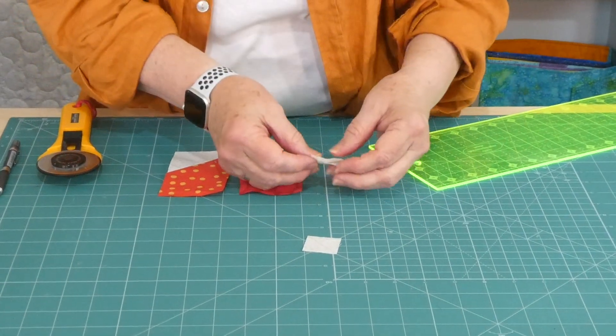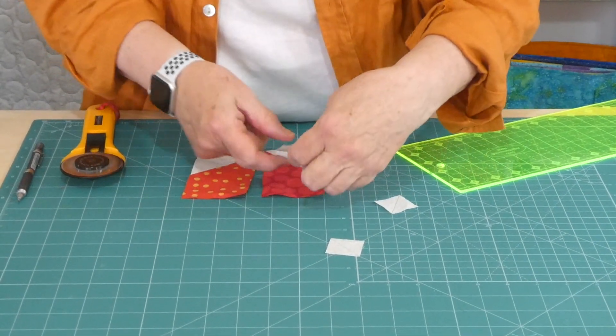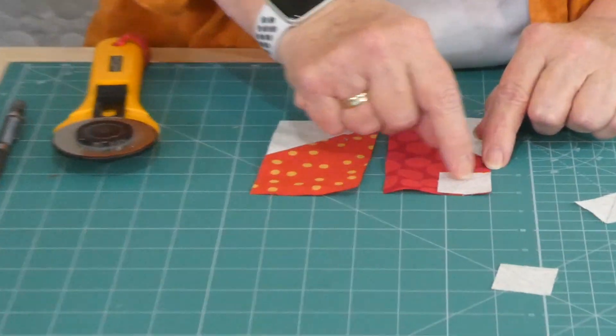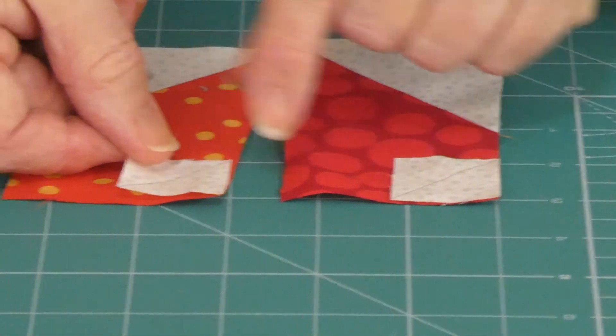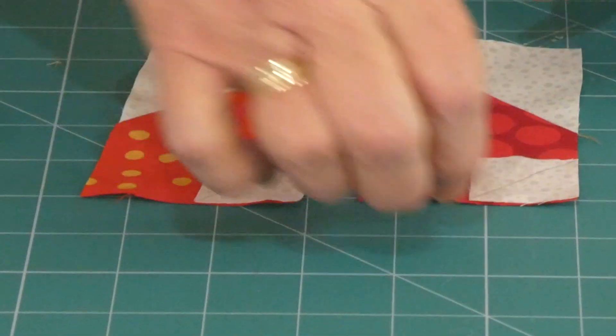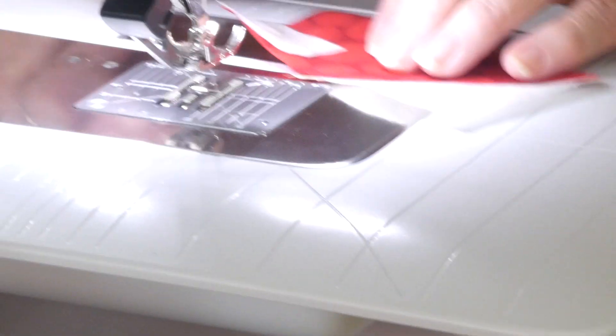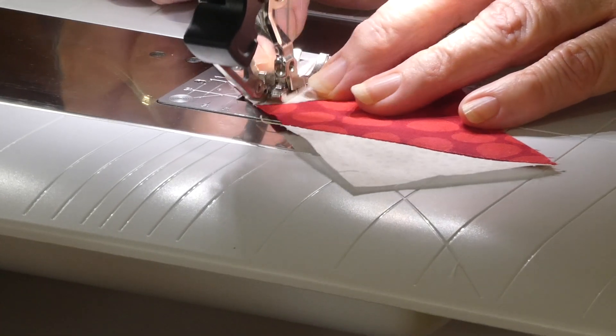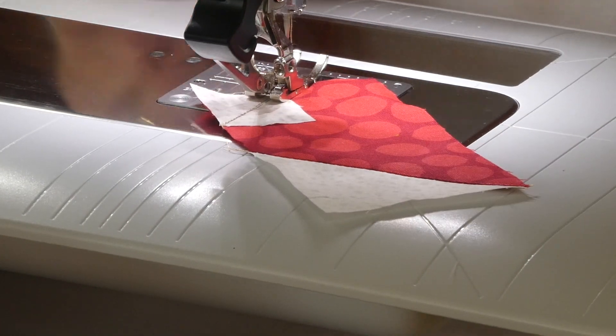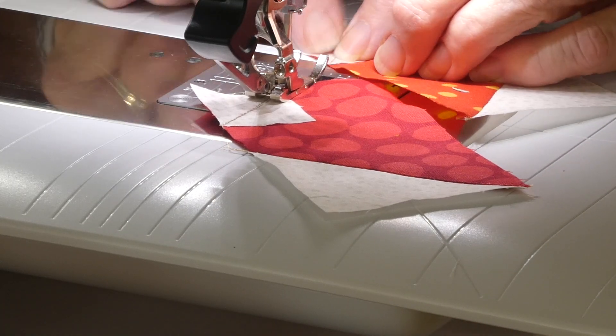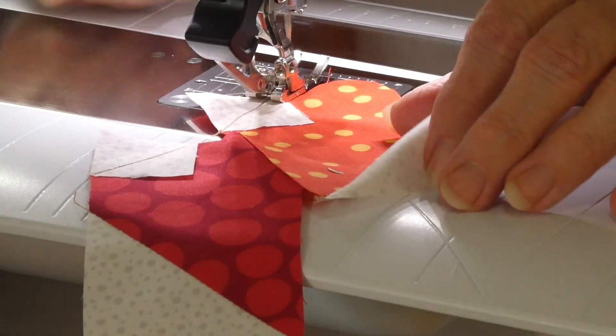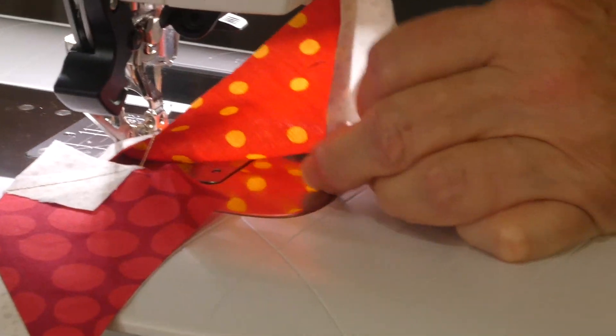Now we need these top little edges. So we just need to pop these on. We're going to come across the corner. We've marked our diagonal lines. We can chain piece these, just do one corner at a time, and then come back and do the other corner. Now the way it looks at the moment, it looks like we're going to have very pointy tops of our hearts.